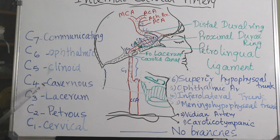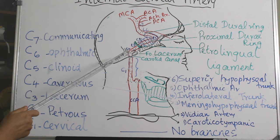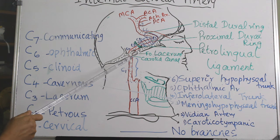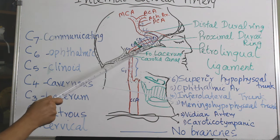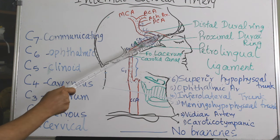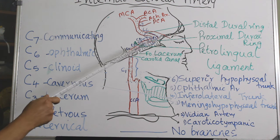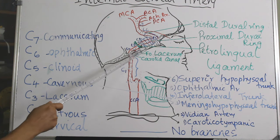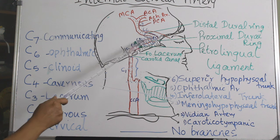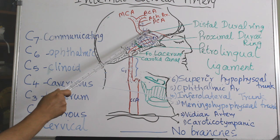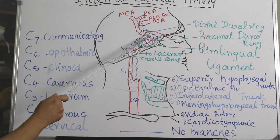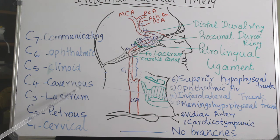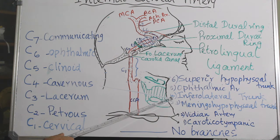The next is C4, the cavernous segment, which starts from the superior margin of the petrolingual ligament to the anterior clinoid process, also referred to as the proximal dural ring. There is also a distal dural ring beyond this. The branches of the cavernous segment include the meningo-hypophysial trunk and the inferolateral trunk.